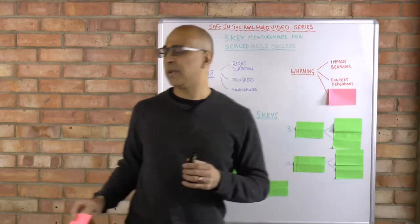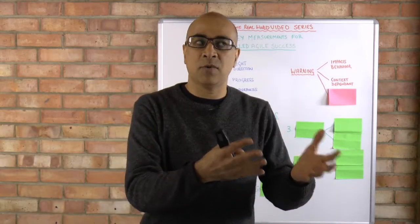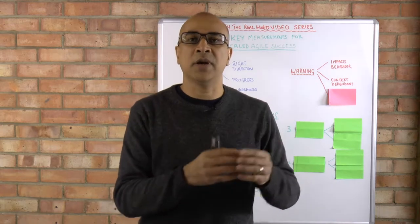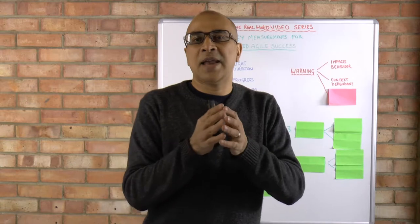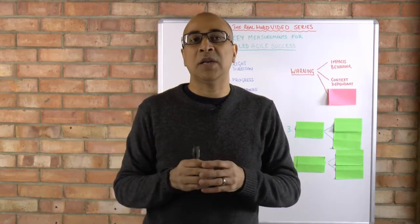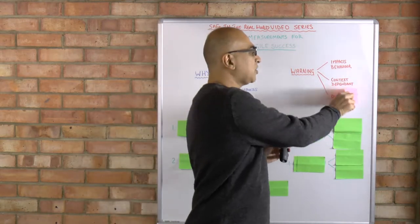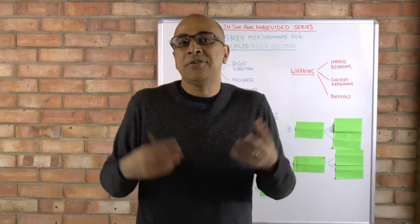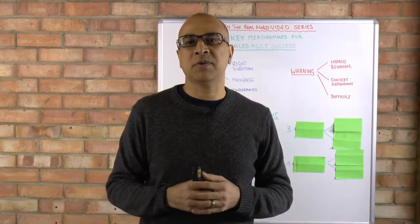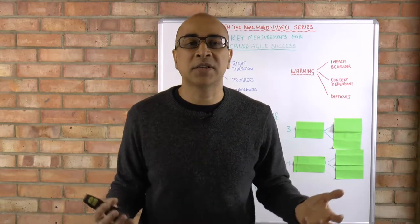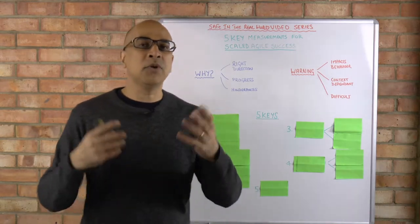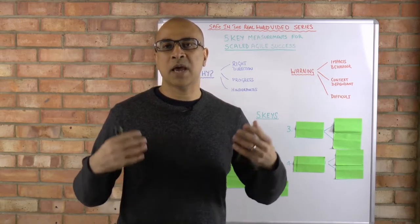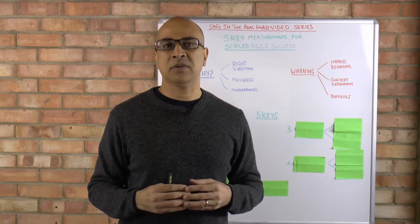Secondly, metrics are context dependent so what could be a valid metric for one team, one project, one scenario, one time may not necessarily be appropriate for another. Comparing one team against another using a metric without taking into context can be quite challenging as well. Finally, metrics are difficult because they really could be subjective at times. What's important for one project may not be important for another. How do you measure a good user experience? It's so subjective. How do you measure a well-designed page? It can have a strong subjective element to it. So what I want to talk about today is at a high level, five key things that if you look at can help you with your metrics and measuring your success.